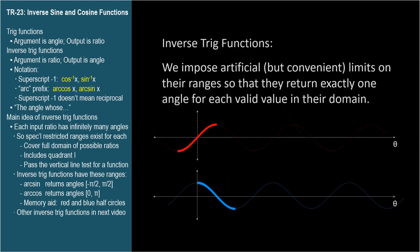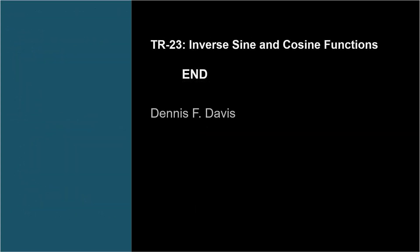The main idea of inverse trig functions is that we impose artificial but convenient limits on their ranges so that they return exactly one angle for each value in their domain. This has been a long video and there's still one trick to cover, so please watch video TR-23x for a bit more information plus some practice problems.